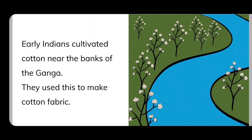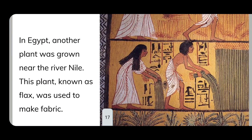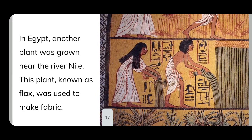In Egypt, another plant was grown near the River Nile. This plant, known as flax, was used to make fabric and cloth.